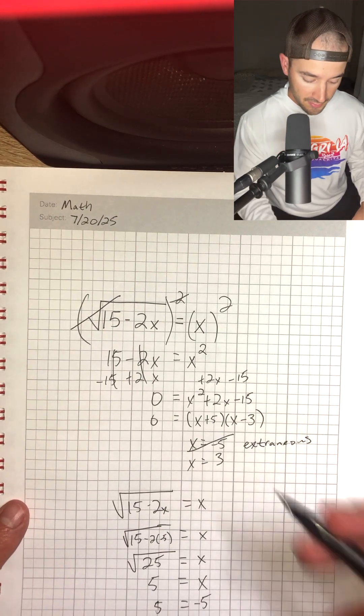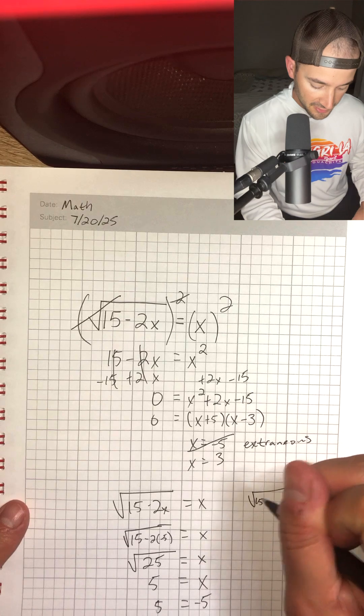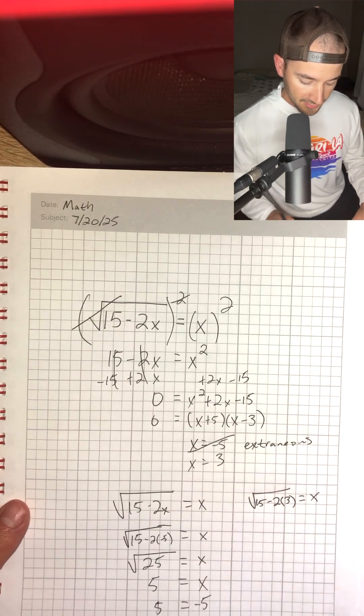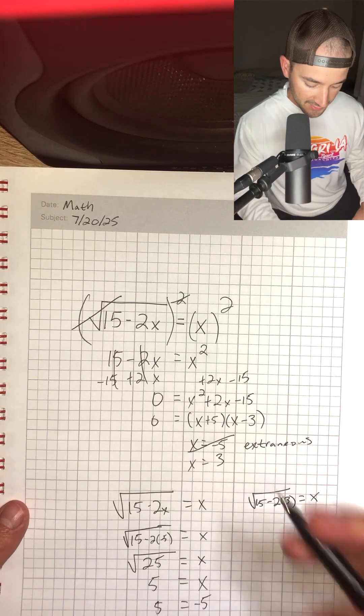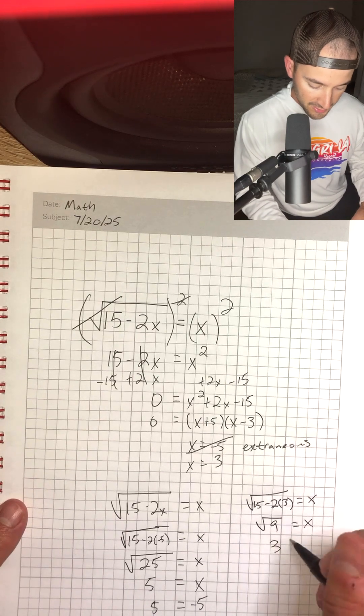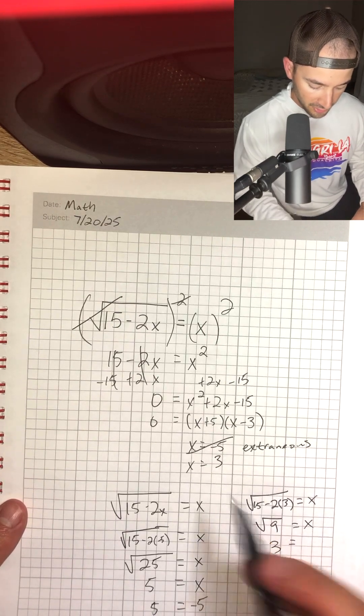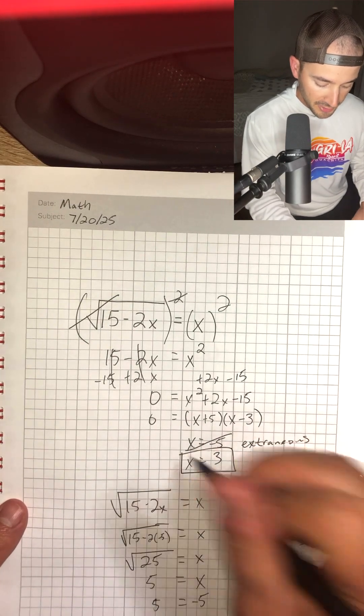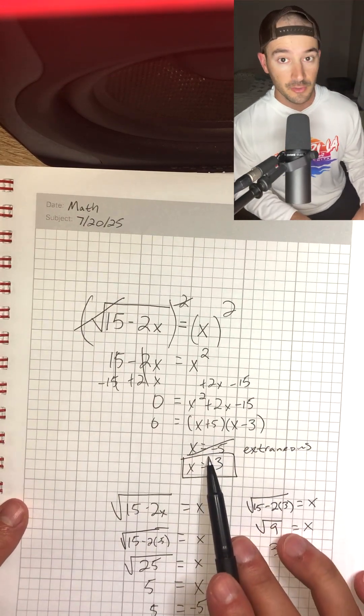Now let's check x equals 3. We have square root of 15 minus 2 times 3 is equal to x. So 15 minus 6, that'd be square root of 9 is equal to x. And so 3 equals 3, and that is true. So x equals 3 would be correct. X equals negative 5 would not be a solution.